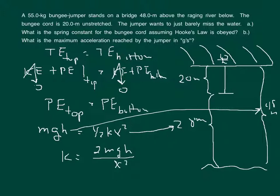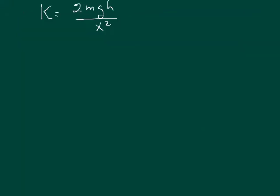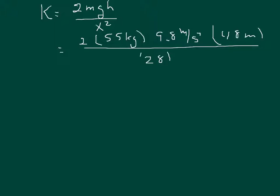Now we put in the numbers. We have the spring constant is 2 times the mass, which is 55 kilograms, times g, which is 9.8 meters per second squared, times the height, which is the total height of 48 meters, all of that divided by the x, which is the amount the bungee cord was stretched squared, and this would be in meters squared.